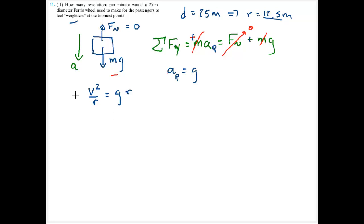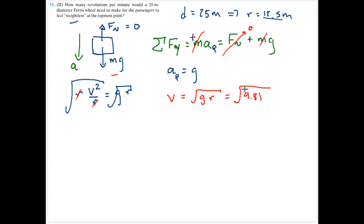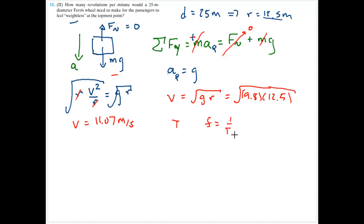The radial acceleration is v squared divided by the radius, set equal to g. Multiplying both sides by radius and taking the square root gives velocity equal to the square root of g times radius, or the square root of 9.8 times 12.5 meters, giving a linear velocity of 11.07 meters per second. However, the answer is needed in revolutions per minute, so I need the frequency.